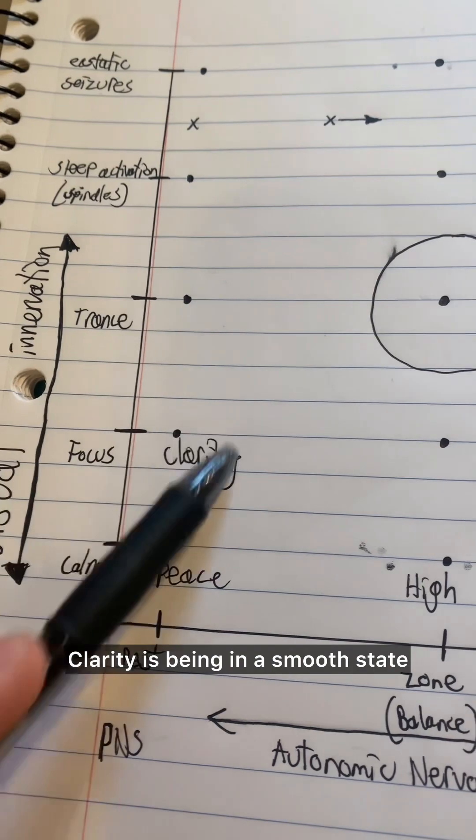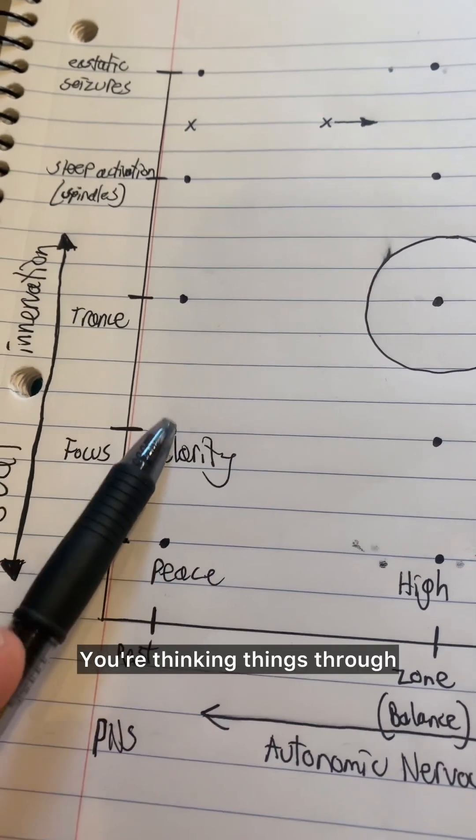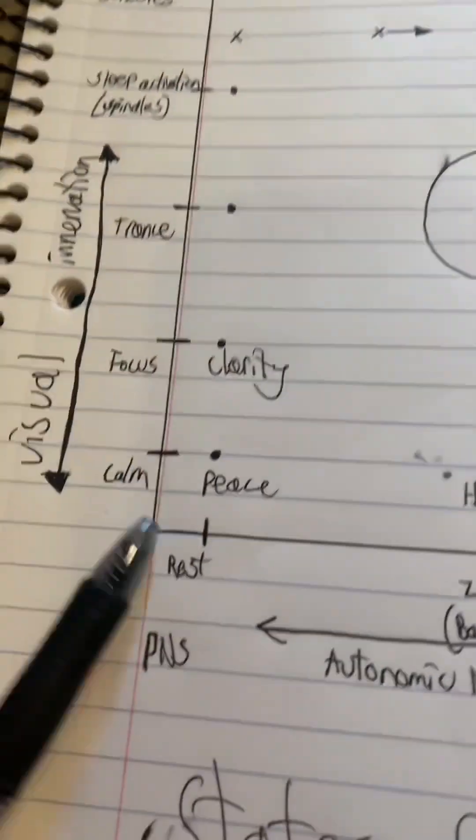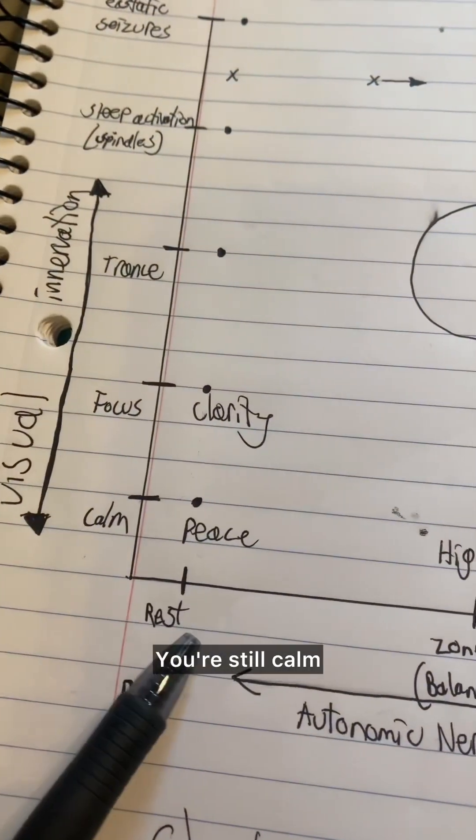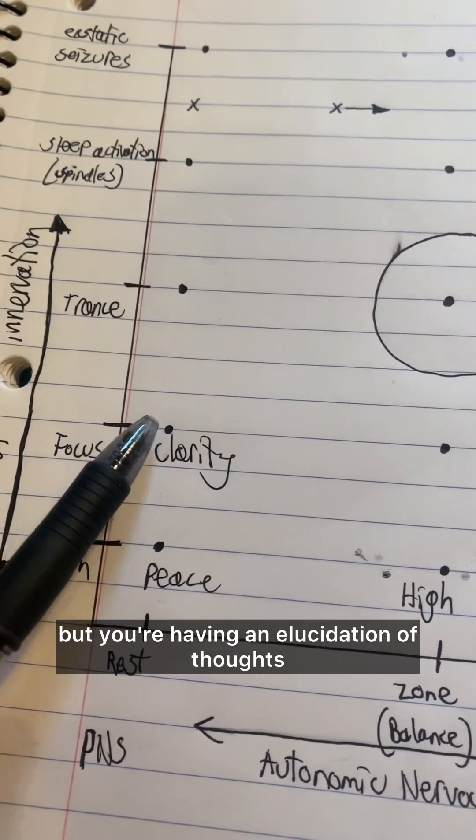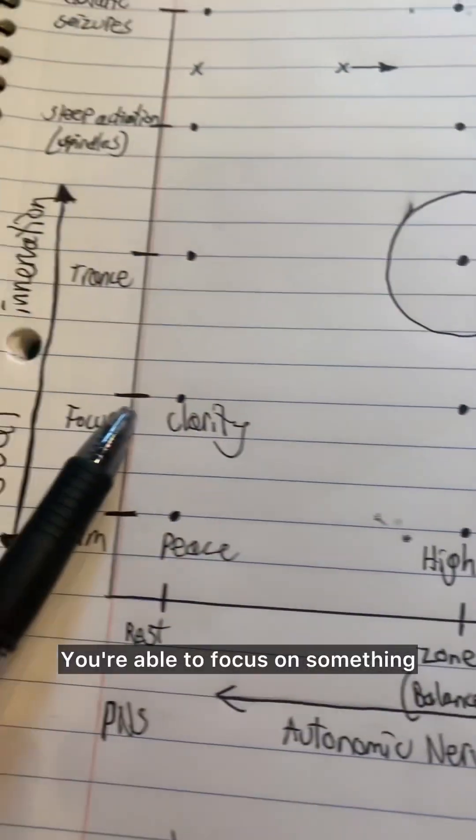Clarity is being in a smooth state. You're thinking things through or you're doing some activity that isn't activating your sympathetic nervous system. You're still calm. You're still at rest, but you're having an elucidation of thoughts. You're able to focus on something.